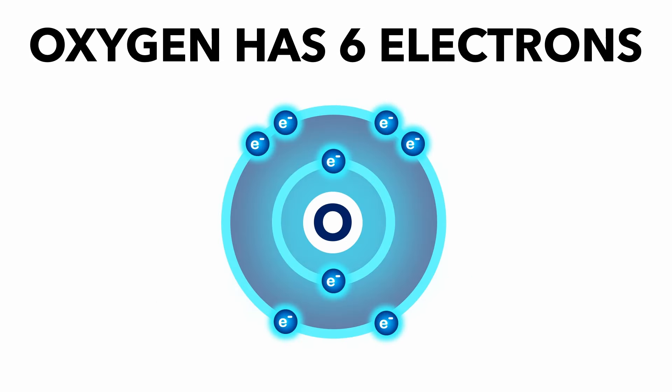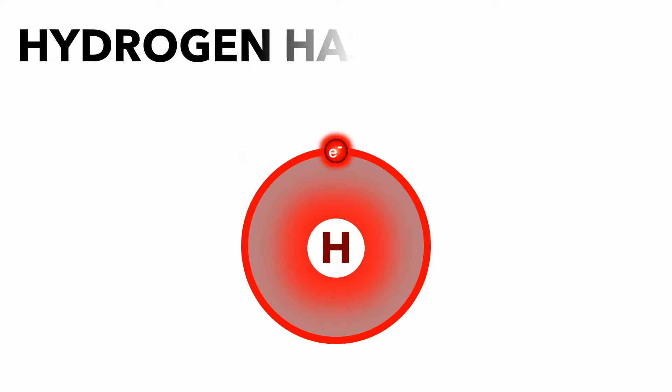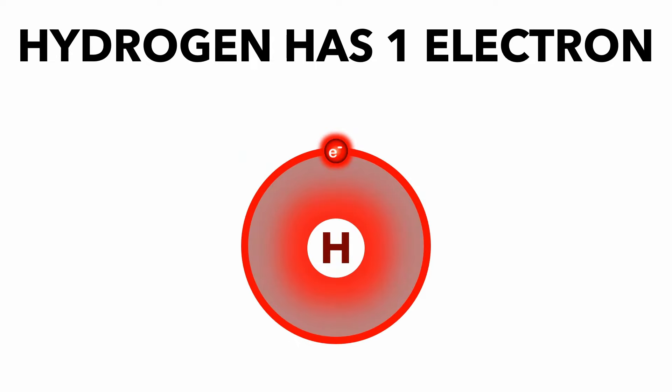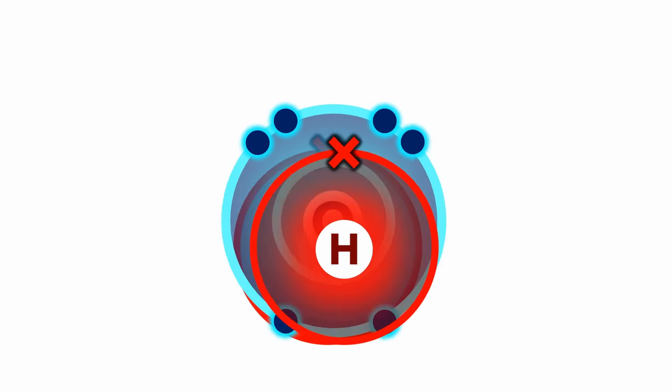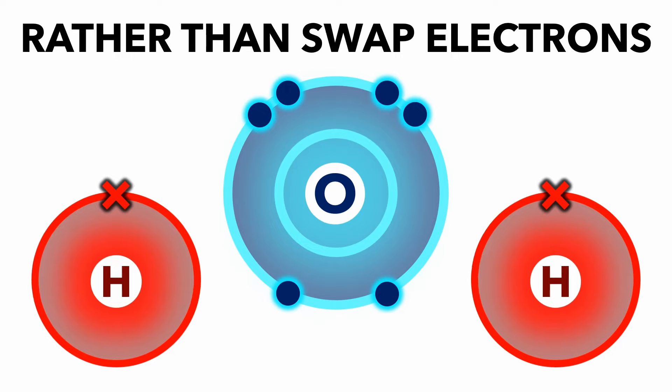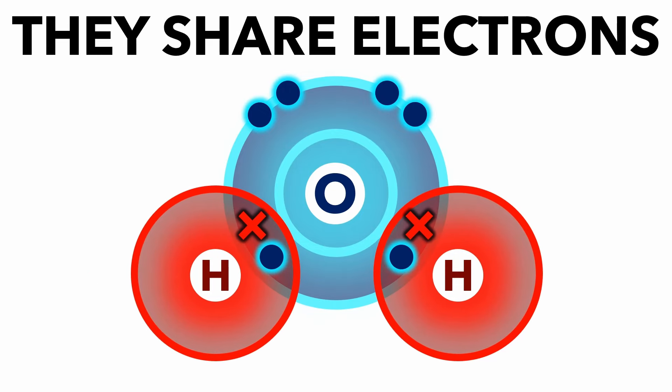Oxygen has six outer shell electrons but needs eight. Hydrogen has one electron in its outer shell but needs two. But rather than swap electrons like ionic bonding, covalent compounds share electrons.